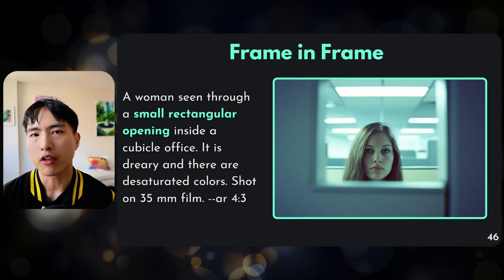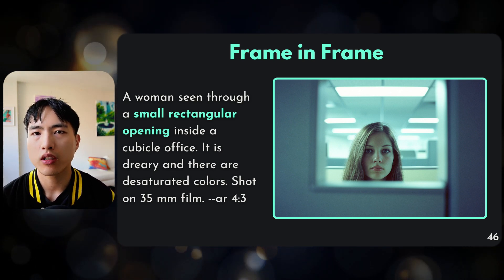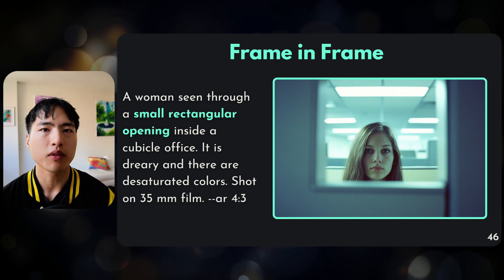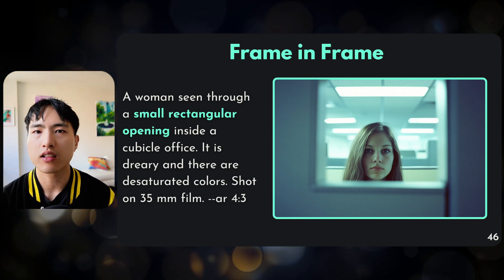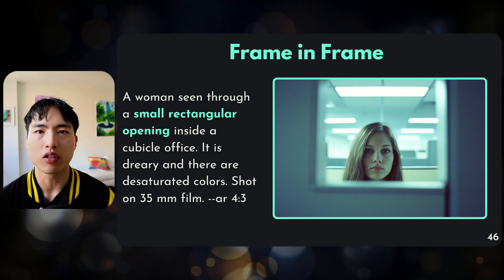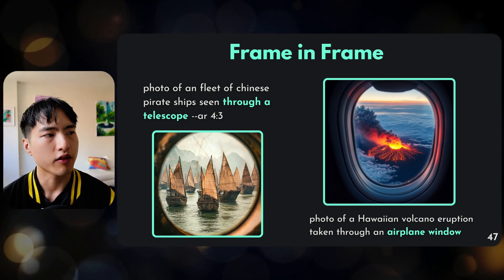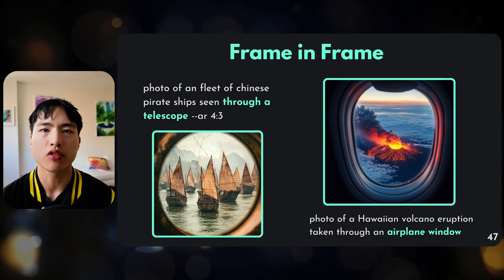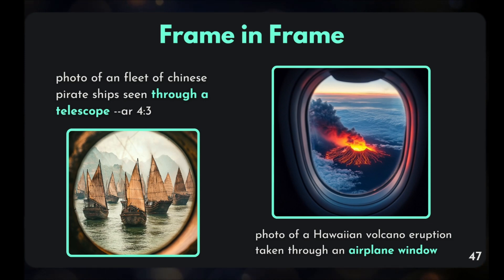Let's talk about framing techniques. You can think of your photo as a frame, but inside that frame, you can create a smaller frame for the focus of the image. For example, a girl is looking at us through a small opening in a cubicle. This technique helps make your images feel much more immersive — it feels like you're on a pirate ship looking at other ships through a telescope, or like you're experiencing a volcano through an airplane window rather than just a plain bird's eye view photo.